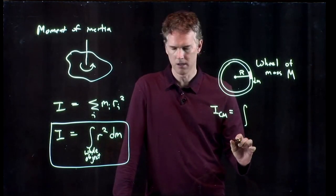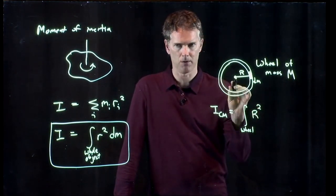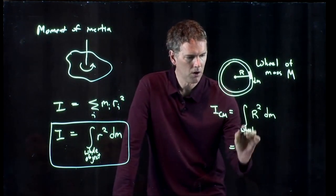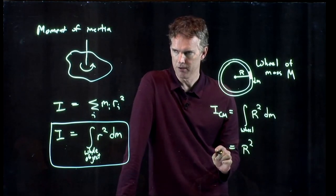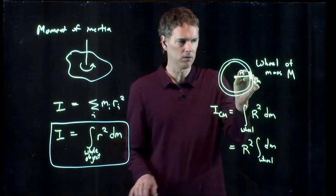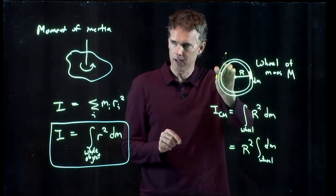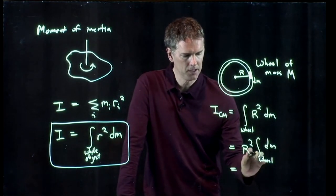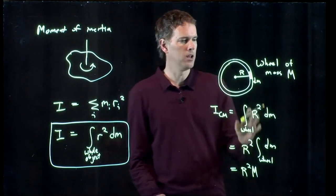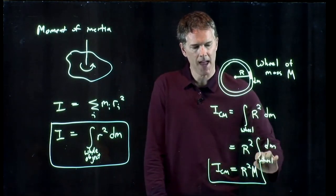But as I integrate around this wheel, r doesn't change. It comes out in front. And so now we just have to integrate dm over the rest of the wheel, over this full rotation. But if I just take a little dm and I add up the next one and the next one and the next one, and I do that for the entire wheel, that just becomes the total mass m of the wheel. Okay? So what is the axis of rotation? It's the center of mass here. What is the moment of inertia about that center of mass? It's just mr squared.